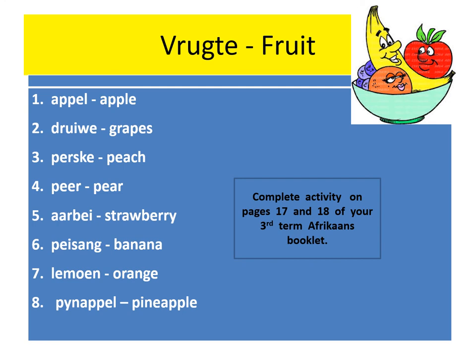Peer: Pear. Arbay: Strawberry. Pisang: Banana. Namun: Orange. Pein-Apple: Pineapple. Please complete the activity on pages 17 and 18 of your third term Afrikaans booklet.